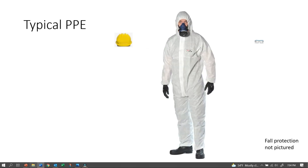Who does personal protection equipment protect? Only the worker. Work practices, such as intact-as-possible removal of materials, prompt cleanup of debris and dust, and engineering controls, such as HEPA vacuums and water, protect everyone in the work area. When work practices and engineering controls are not sufficient to protect workers, then we use PPE.